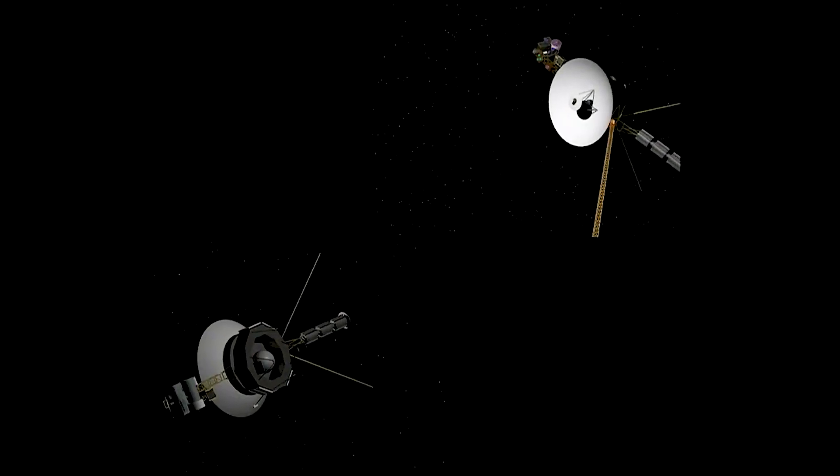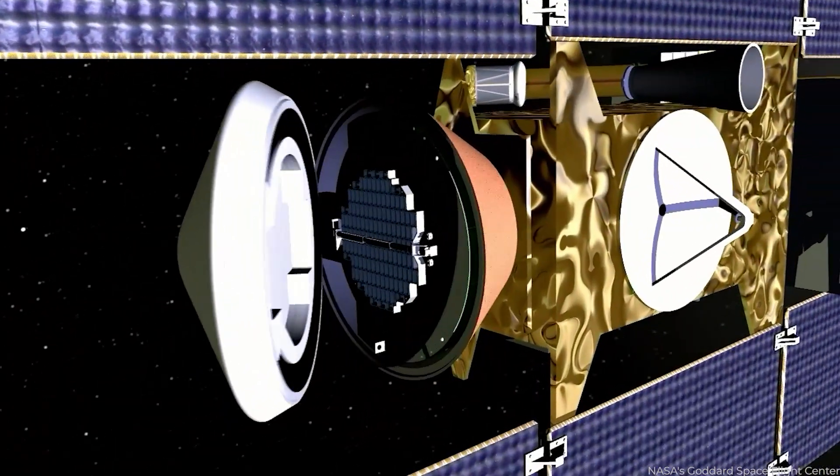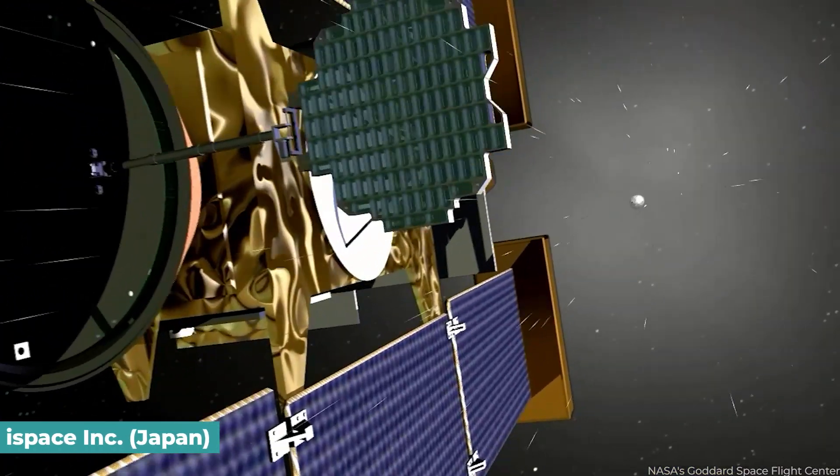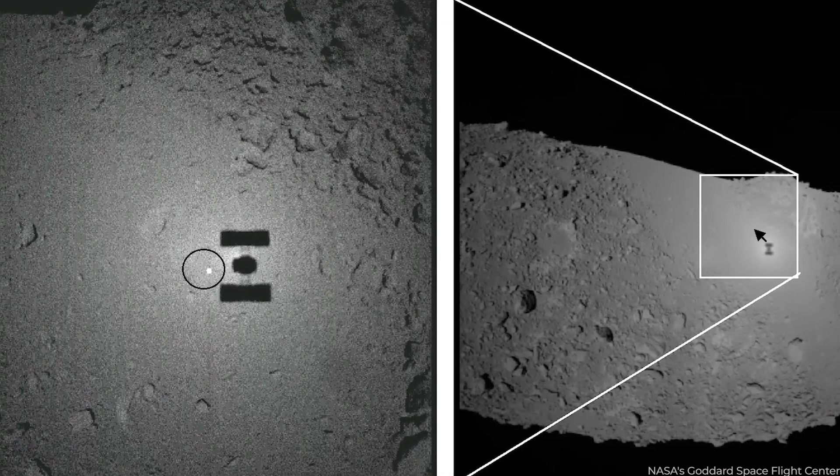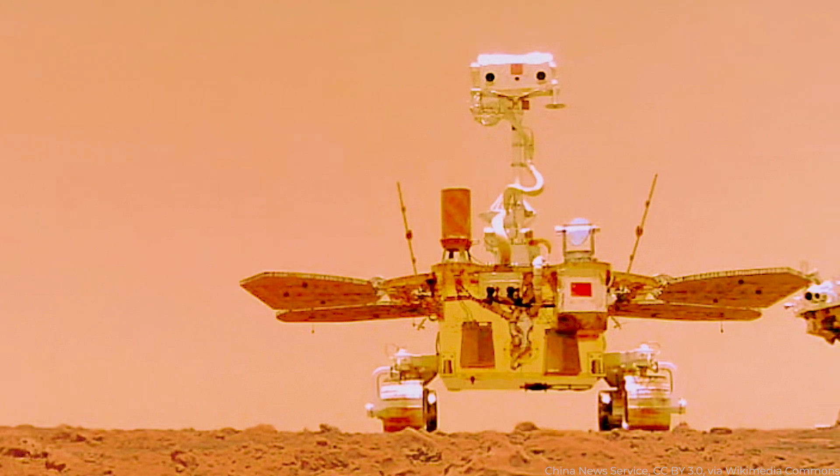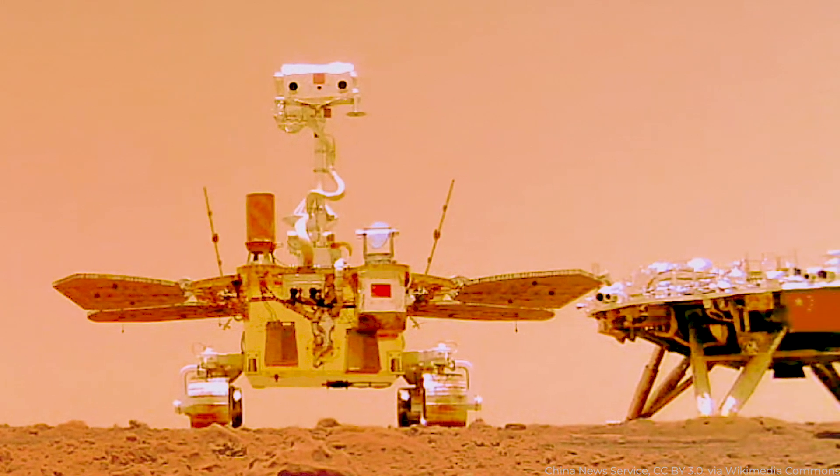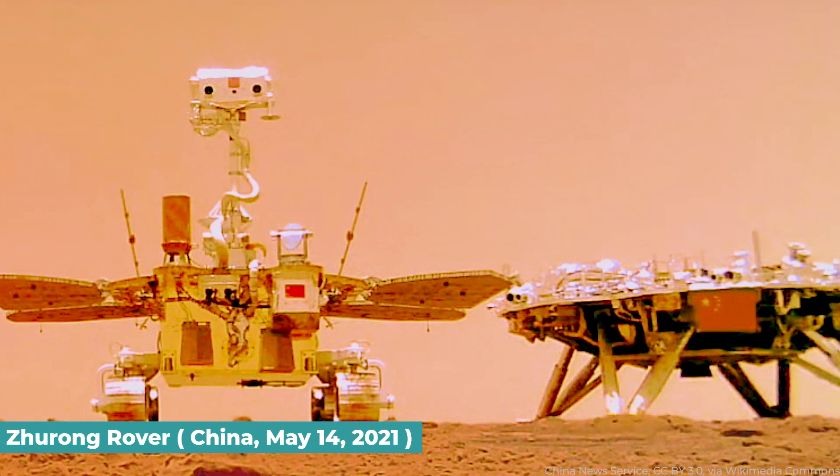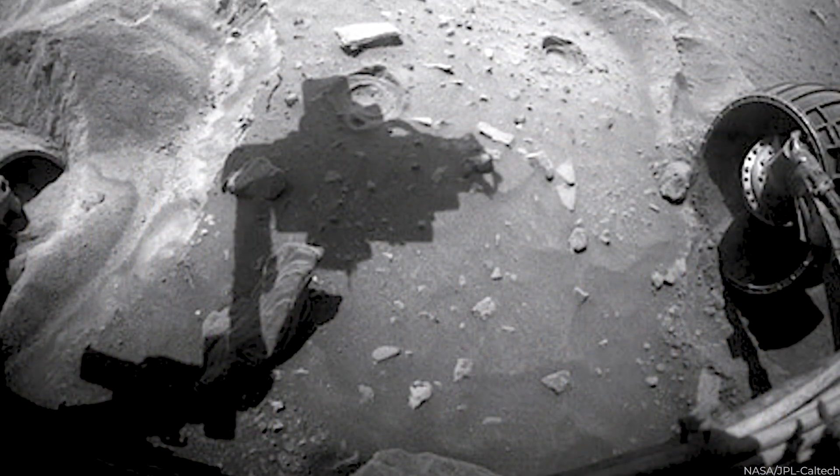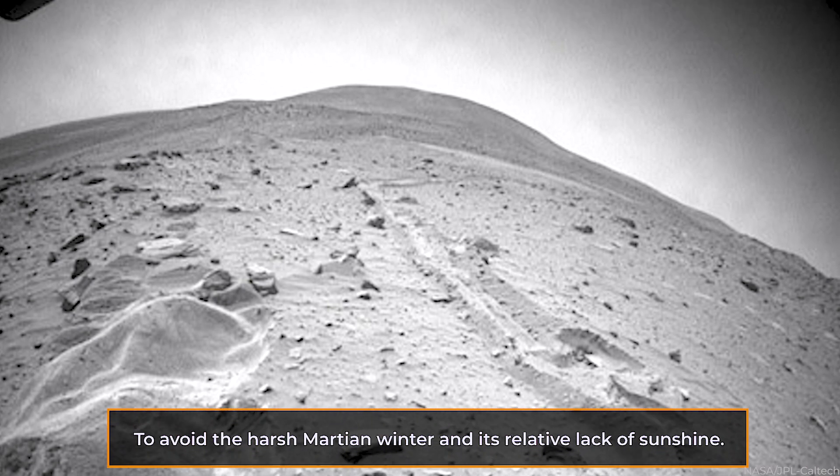Voyager 1 and 2 aren't the only spacecrafts with such records. Malfunctioning space probes have recently made headlines, such as the Japanese robotic spacecraft business, iSpace Inc., which lost touch with its probe in late April after presumably crashing into the moon's surface. Another victim was recorded when China announced that it is impossible to restore communication with its Zhurong rover, which has been scratching around in the mud of Mars since May 14th, 2021. It went into slumber about a year later to avoid the harsh Martian winter and its relative lack of sunshine.